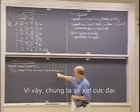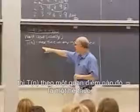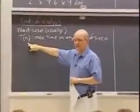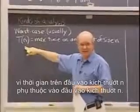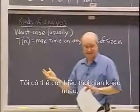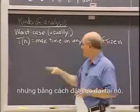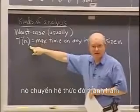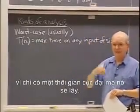So we are looking at the maximum. Notice that if I didn't have maximum, then T(n) is, in some sense, a relation, not a function — because the time on an input of size n depends upon which input of size n; I could have many different times. But by putting the maximum in, it turns that relation into a function because there is a maximum time that it will take.